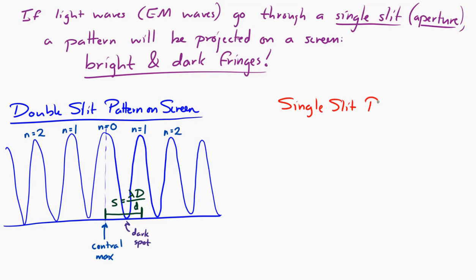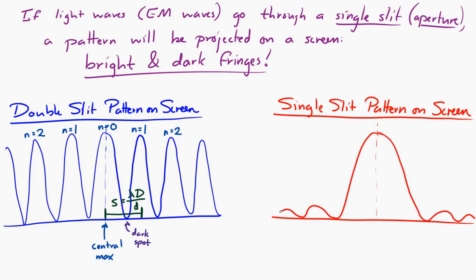Now, for a single slit, you get this kind of a pattern when it reaches the screen. You get a wide central maximum, and then you get these outer fringes. But these outer fringes are quite a bit smaller than that central maximum. So there's some similarities, but there's also some pretty distinct differences. So why the heck does that happen with the single slit?